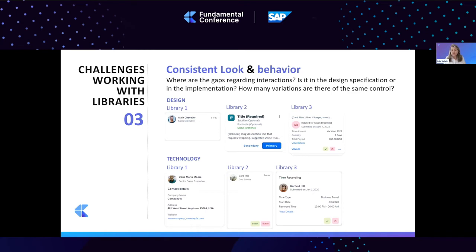How do I identify each one of them? How do I call each one of them? Where are the gaps regarding interactions — is it in the design specification or in the implementation? How many variations are there for this control? A component that contains variations should be easily identified and should inform both designers and developers so we speak the same language and call the element the same thing.